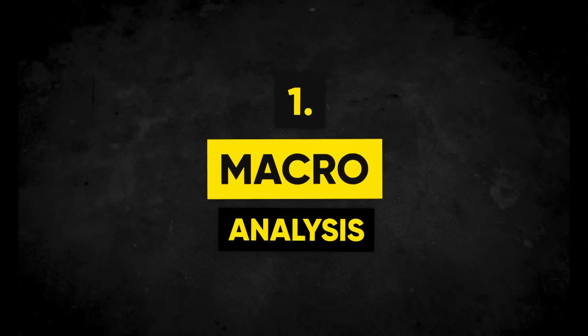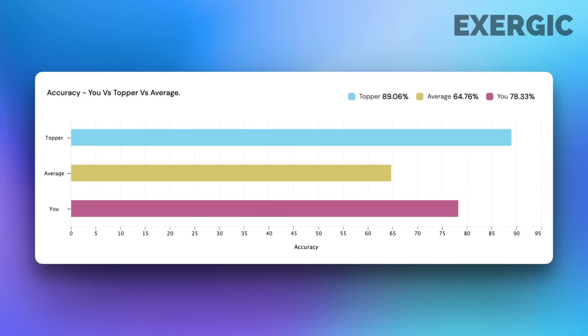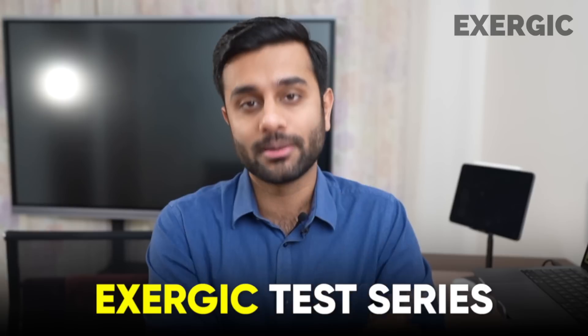Macro analysis is primarily done using the data generated after you attempt a test series. The software gives you a performance analysis, and that analysis is going to help you in doing the macro analysis. If the test series you are attempting has a good analytics report, this process will get a lot easier, faster, and more effective. In this video, I am going to take the example of the Exergic test series report, because I believe it offers one of the best analytics after you attempt a test. There are many factors you may see in the analysis screen, but there are certain things you must not miss.